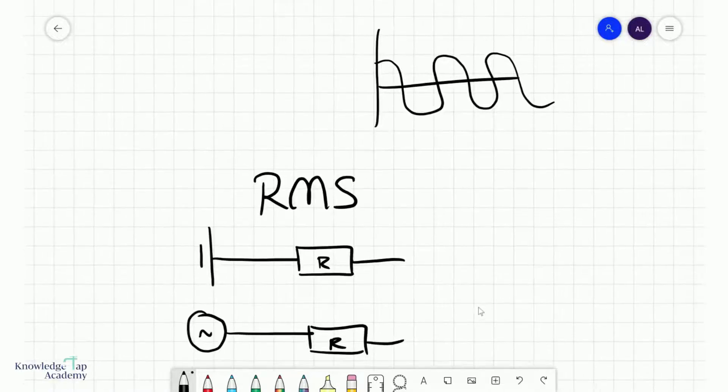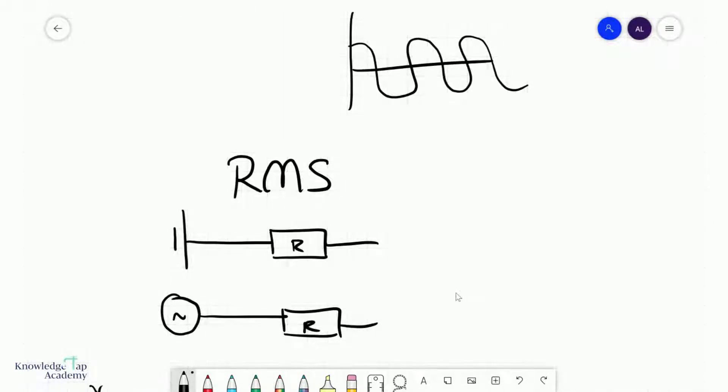And so we first understand the significance of why we need an RMS value. RMS stands for root mean square, and you can think of that as an aggregated value. So it's one value to represent all the things that are going here, which makes it a little bit easier to comprehend or to quantify.